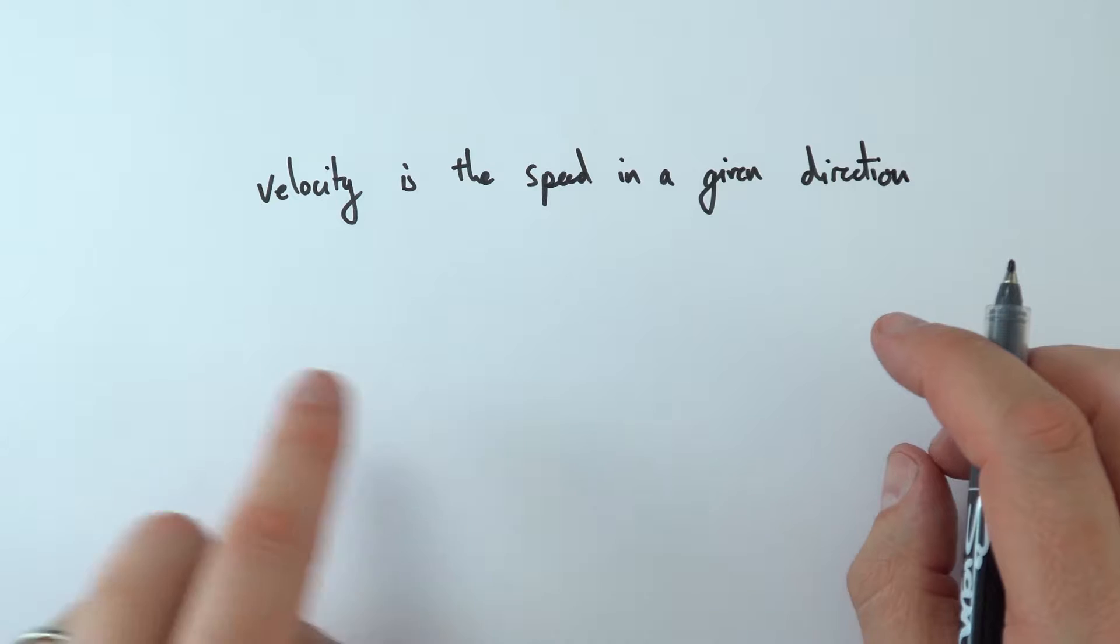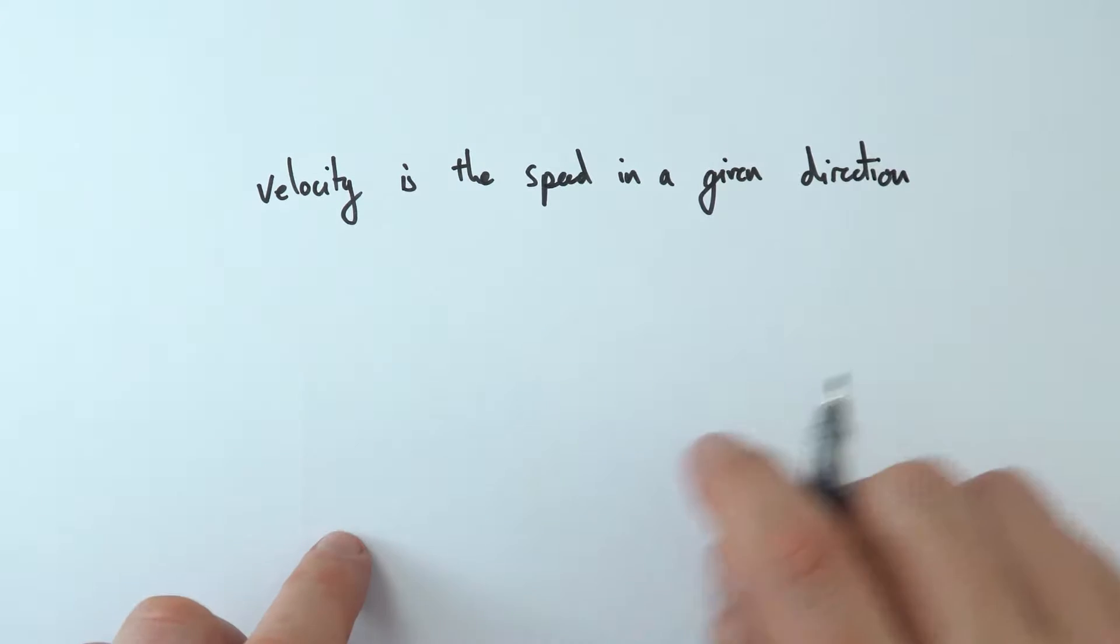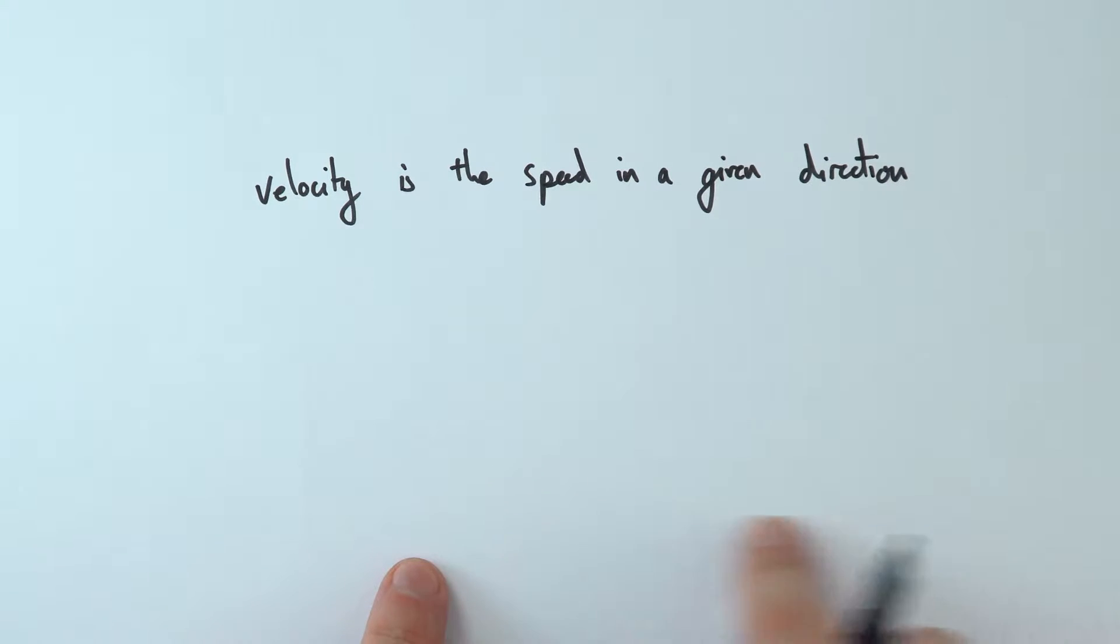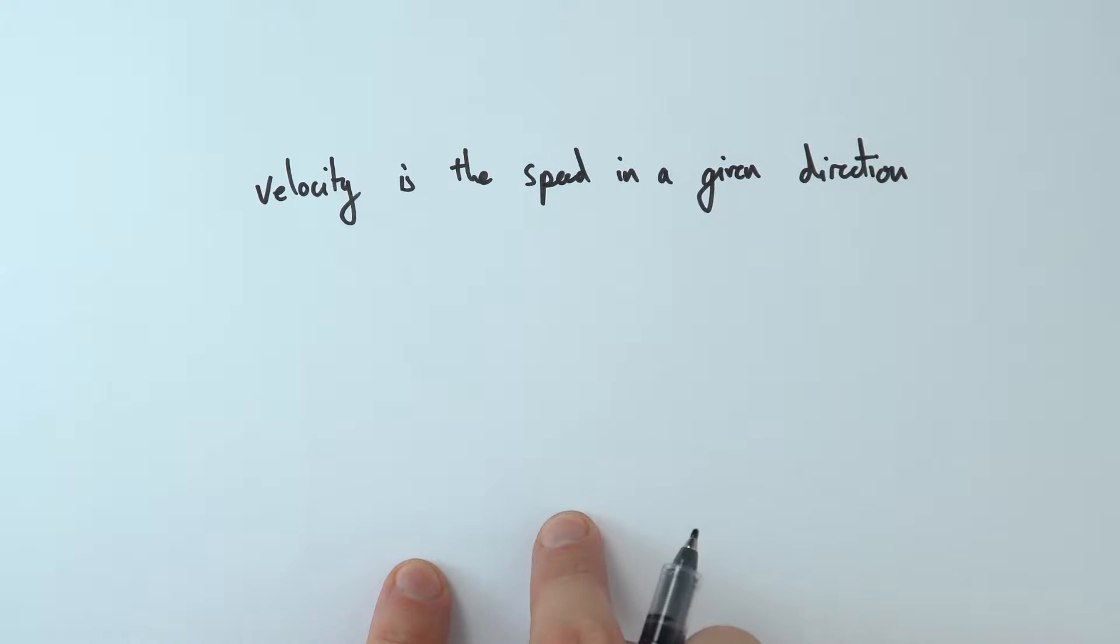So we might be thinking about things which are going left or right or up or down, or maybe sometimes we say things going this direction are positive and things this direction are negative. Now when it comes to velocity, it is still pretty similar to speed.